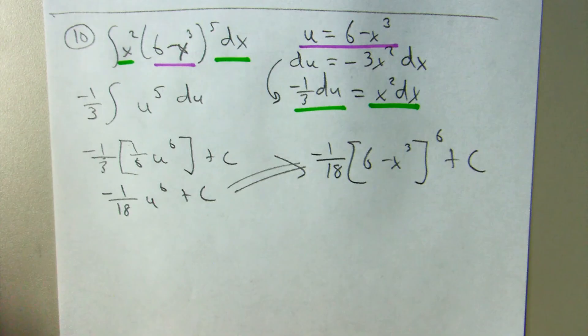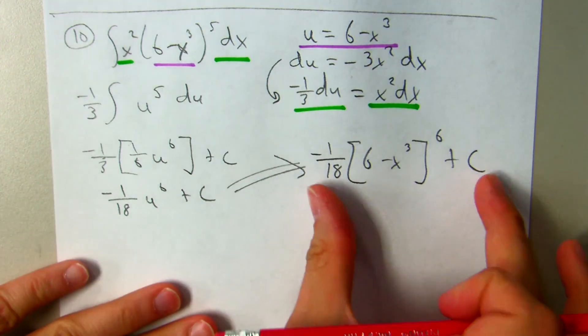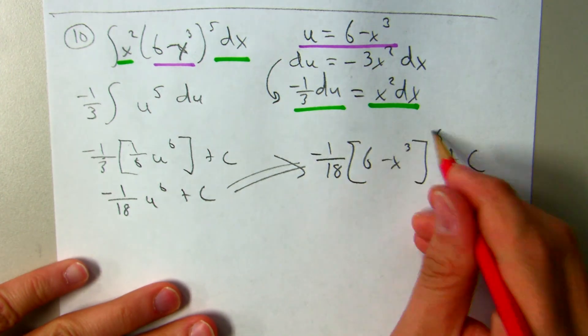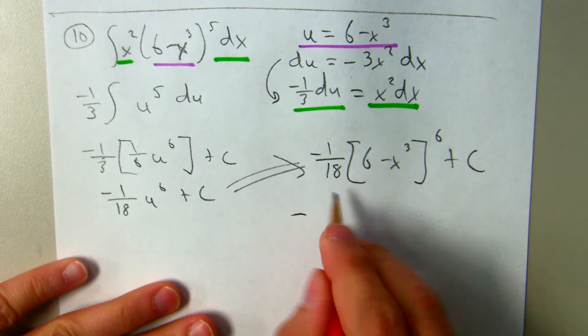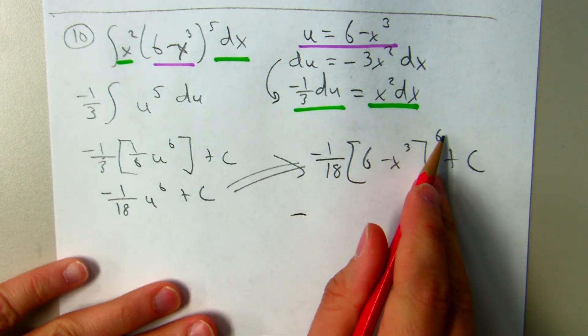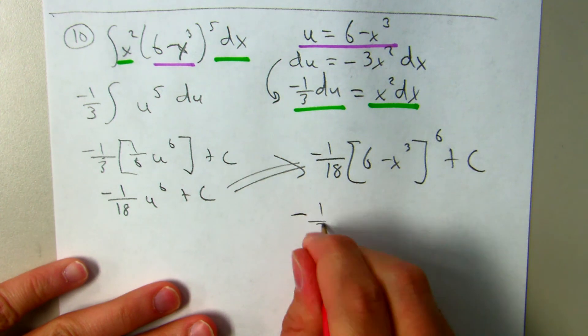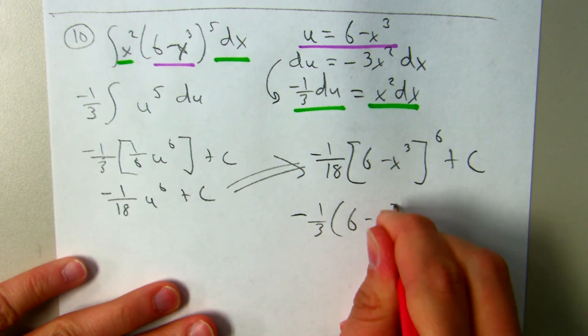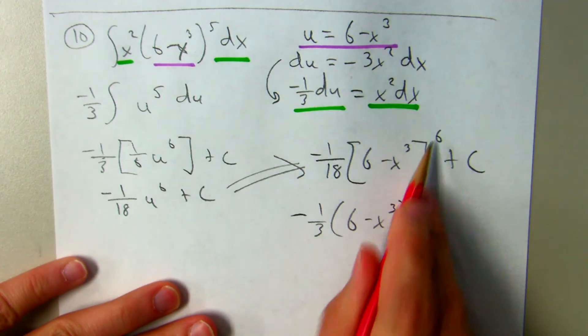Now, my check. If I try to take the derivative of this, I would start off with the power rule. I would bring the power down, negative 1/18 times 6 would be negative 1/3. I would lower the power by 1, lower the power by 1.